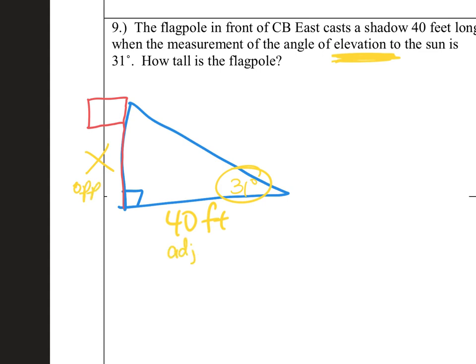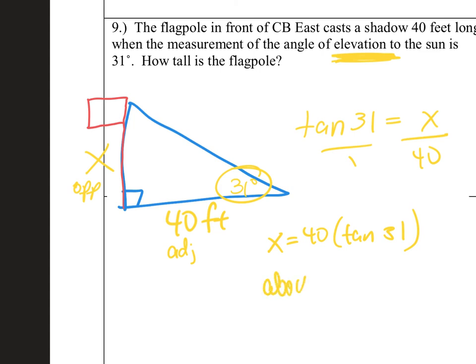Tangent of 31 equals opposite over adjacent. Cross multiply: X equals 40 times the tangent of 31. About 24 feet tall. That makes a lot of sense.